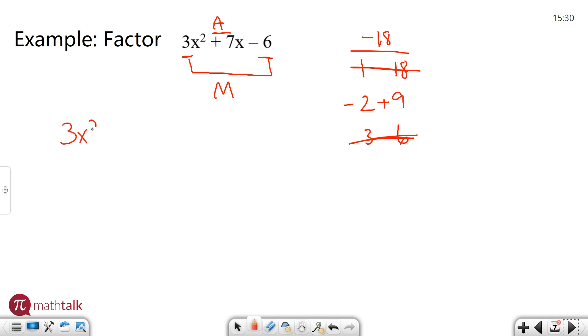And so I'm going to rewrite this a little bit. I'm going to say 3x². Instead of writing plus 7x, I'm going to write it as minus 2x plus 9x, and then minus six. The reason I do that is because now I can use a thing called factoring by grouping.